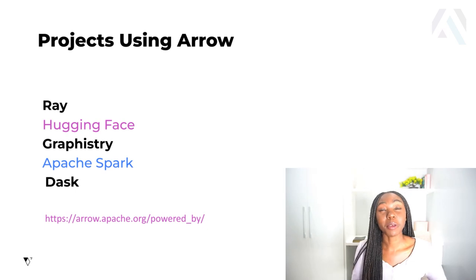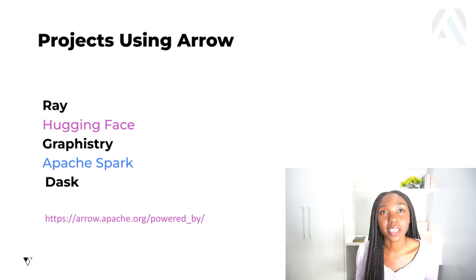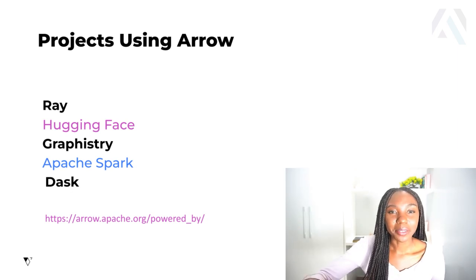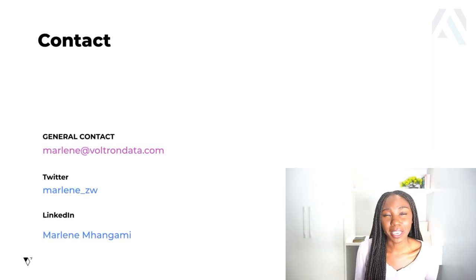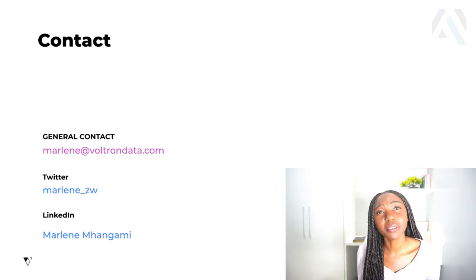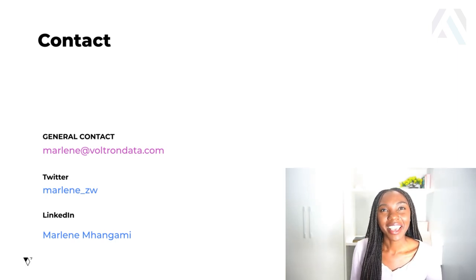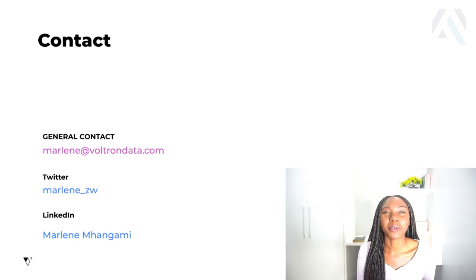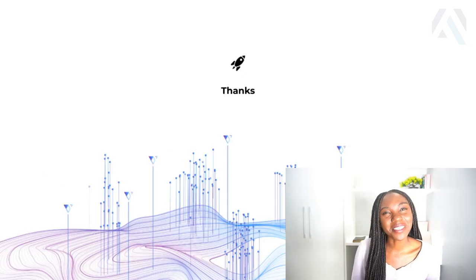I'd like to shout out some amazing Python projects that are using Arrow: Ray, HuggingFace, Graphistry, Apache Spark, and Dask are all using Arrow in some way, which is really awesome. That is pretty much the end of my talk. If you enjoyed this and would like to reach out, you can email me at marlene@voltrondata.com, tweet at me at marlene_ZW, or connect with me on LinkedIn. Hopefully this talk helped you understand what Arrow is and why you should use it as a Python programmer. Thank you so much for listening.